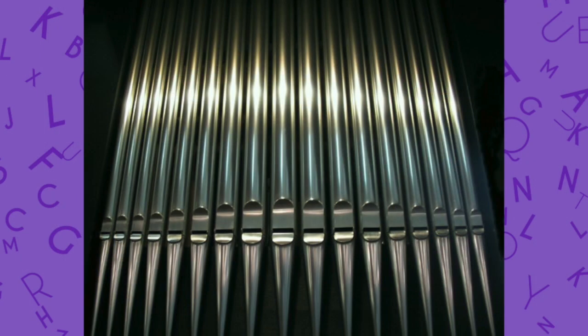If you were to ask somebody who doesn't know much about the organ to draw an organ pipe, the chances are they'd probably draw something a little bit like this. It's metal, it is of a cylindrical cross-section, and it's the sort of thing you see on the front of many organs, screening the outside world from the many thousands of pipes which often lurk within. Those visible pipes — the archetypal organ pipes — are diapason pipes, and here's what they sound like.